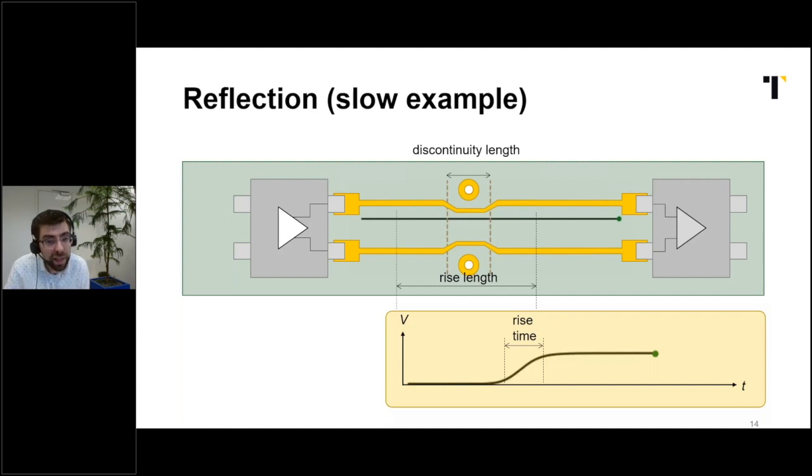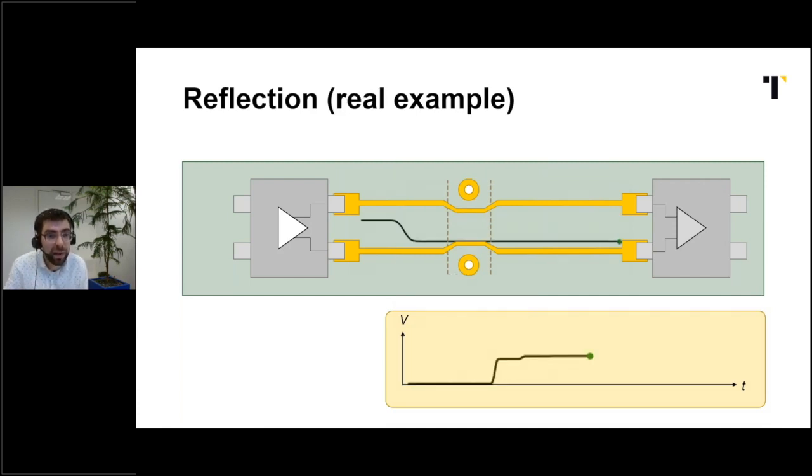Whereas if we go back to PCIe speeds again, the rise time is much smaller. And the rise length too, much smaller than the length of the discontinuity. And consequently, the reflections are visible at the receiver. But how bad is it? Let's have a look at two important metrics.